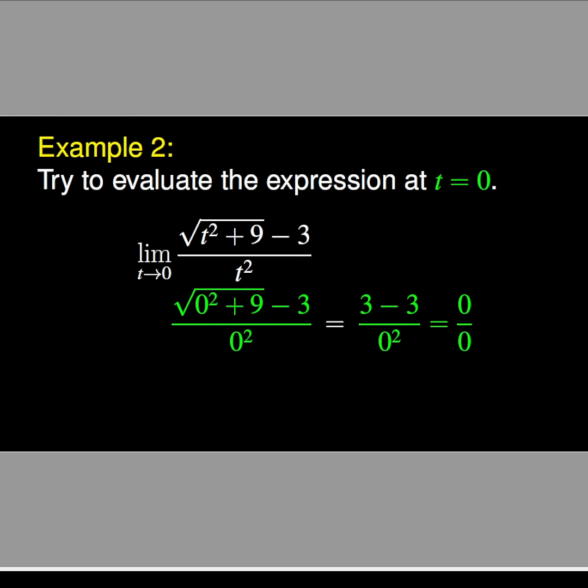It is clear that the numerator is 3 minus 3, and the denominator is 0, because the square root of 9 is 3. This is obviously 0/0, which is undefined. In order to resolve this issue, we have to use the conjugate expression of the numerator.